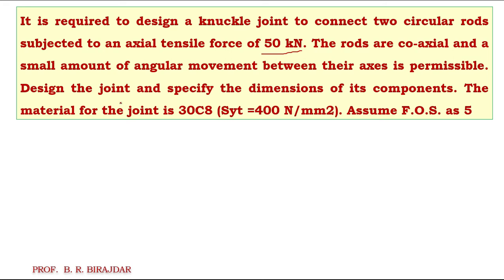The material specified for this joint is 30C8, whose Syt is 400 newton per mm square, and we have to assume the factor of safety as 5. So they have given the load, material, and the factor of safety for this knuckle joint, and we have to design and finalize the dimensions. Now first we will write down the given data.